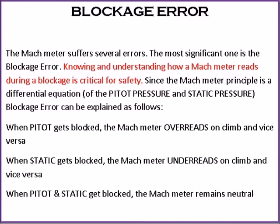The Mach meter suffers several errors, the most significant being blockage error. Knowing how a Mach meter reads during a blockage is critical for safety. Since the Mach meter operates on the differential equation of pitot and static pressure: when pitot gets blocked, the Mach meter over-reads on climb and vice versa; when static gets blocked, the Mach meter under-reads on climb and vice versa; when both pitot and static get blocked, the Mach meter remains neutral.